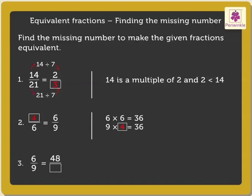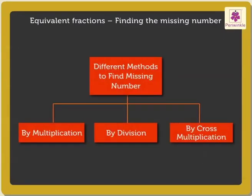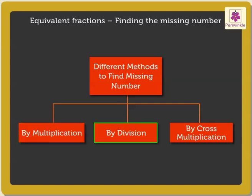Example 3: Here, as 48 is a multiple of 6 and also greater than 6, we multiply the numerator and denominator by 8 to get the missing number, 72. Kids, remember, the different methods that can be followed to obtain the missing number in a pair of equivalent fractions are: 1) by multiplication, 2) by division, and 3) by cross-multiplication.